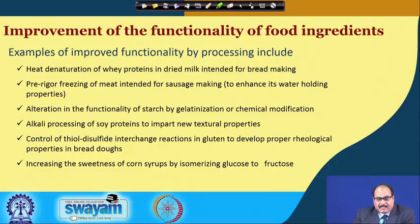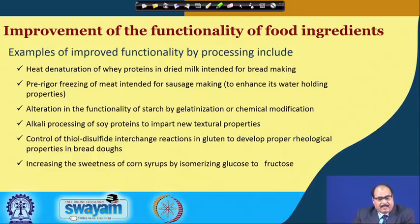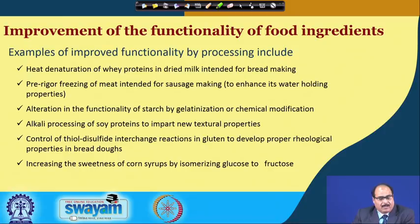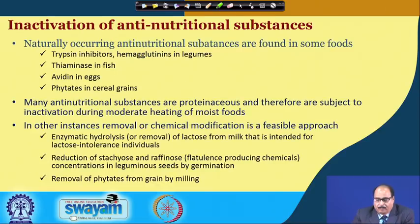Examples of improved functionality of processed food include heat denaturation of whey protein in dried milk intended for bread making, pre-rigor freezing of meat intended for sausage making, alteration in the functionality of starch by gelatinization or chemical modification, alkali processing of soya proteins to impart new textural properties, control of thiol-disulphide interchange reactions in gluten to develop proper rheological properties in bread dough, or increasing the sweetness of corn syrup by isomerizing glucose to fructose. In all these processes you can see how the functionality of food is improved by processing.